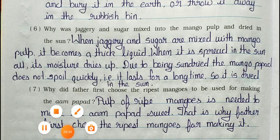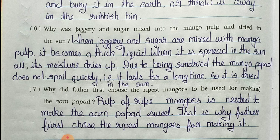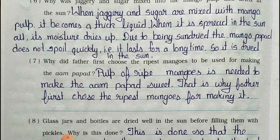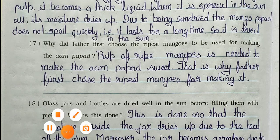Question 6: Why was jaggery and sugar mixed into the mango pulp and dried in the sun? Answer: When jaggery and sugar are mixed with mango pulp it becomes a thick liquid. When spread in the sun, all its moisture dries up. Due to being sun-dried, the mango pulp does not spoil quickly and it lasts for a long time.